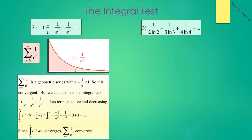There are more than one test that will frequently work. The terms 1 plus 1 over e plus 1 over e squared are positive and decreasing, so we look at the integral from 0 to infinity of e to the negative x dx, which is negative e to the negative x evaluated from 0 to infinity, giving negative 1 over e to the infinity plus 1 over e to the 0, which is 1. Since the integral converges, so does the series summation from n equals 0 to infinity of 1 over e to the n. Obviously this problem is much easier done by recognizing it as a geometric series.